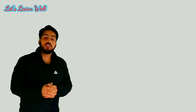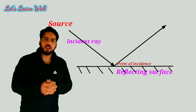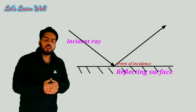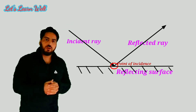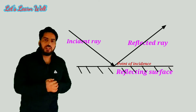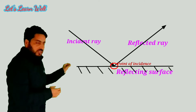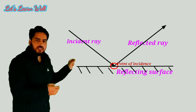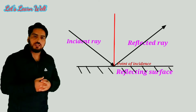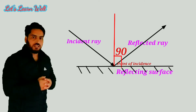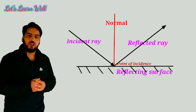When an incident ray falls on a reflecting surface, it does not pass through it. Rather, it returns back or bounces back as a reflected ray. This bouncing back or returning back of light is called reflection of light. At the point of incidence where the incident ray strikes, if we draw an imaginary line that makes an angle of 90 degrees with the reflecting surface, this imaginary line is known as the normal.